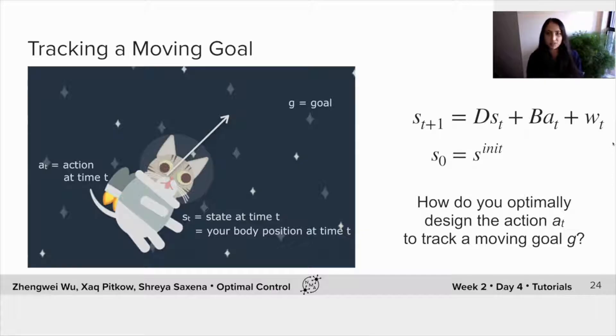Why would this be important? Let's say that the goal you want to track here, the mouse, is actually moving from side to side. And really, you want to be able to track its movements to be able to catch it.